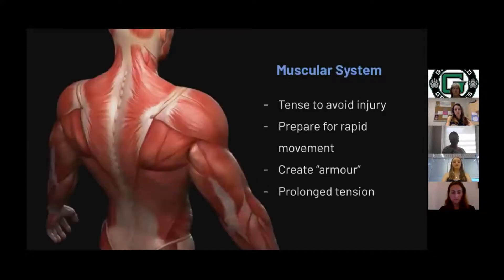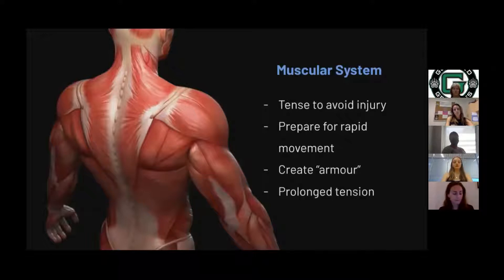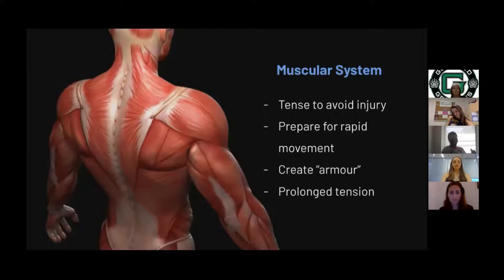Starting with the muscular system, it produces noticeable and tangible effects. Upon a stressful situation, muscles will tense to protect against any injuries. They are preparing for any rapid movements required in the fight or flight response and are also creating an armor against potential threats. Long periods of these muscles being tense, though, can produce even more noticeable effects. For instance, prolonged tension in the neck and shoulder can cause headaches or migraines.